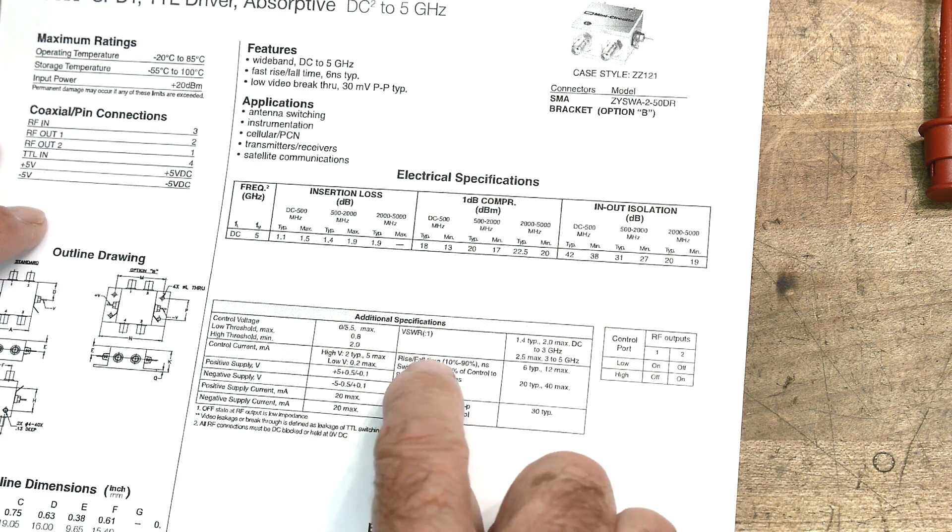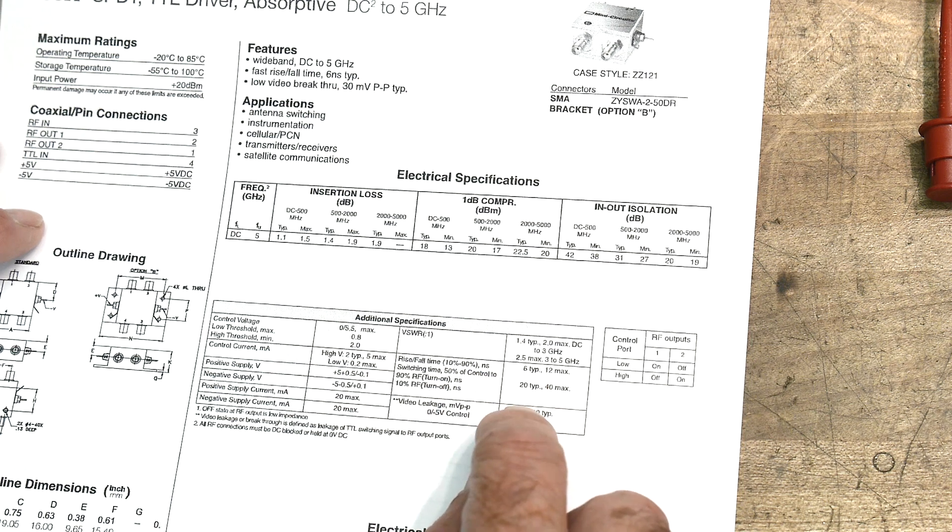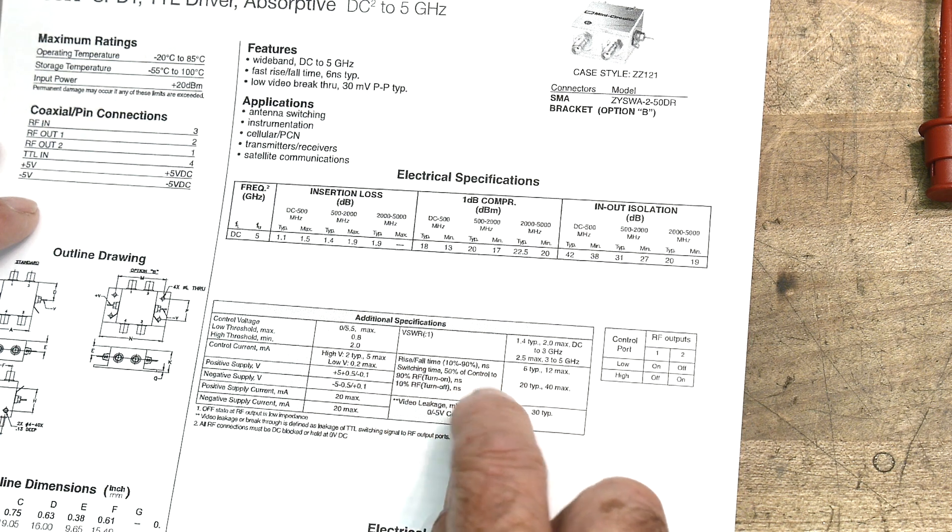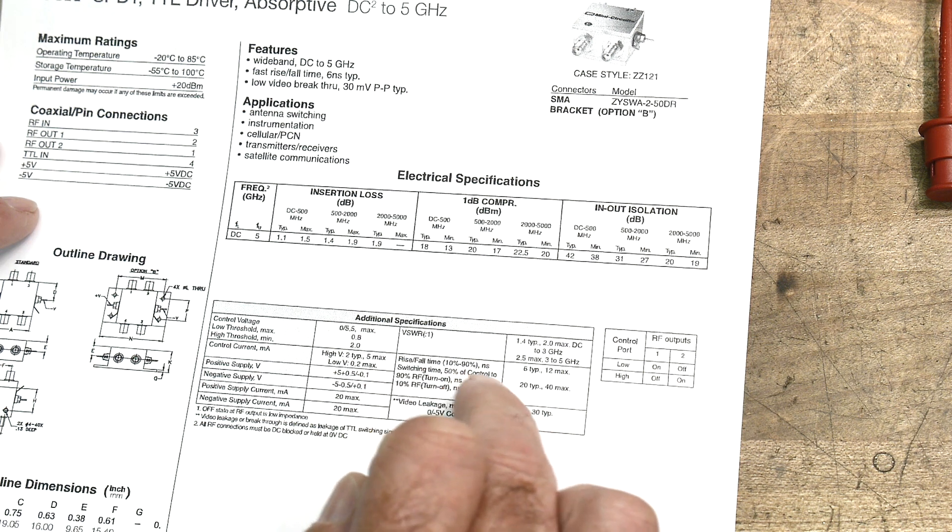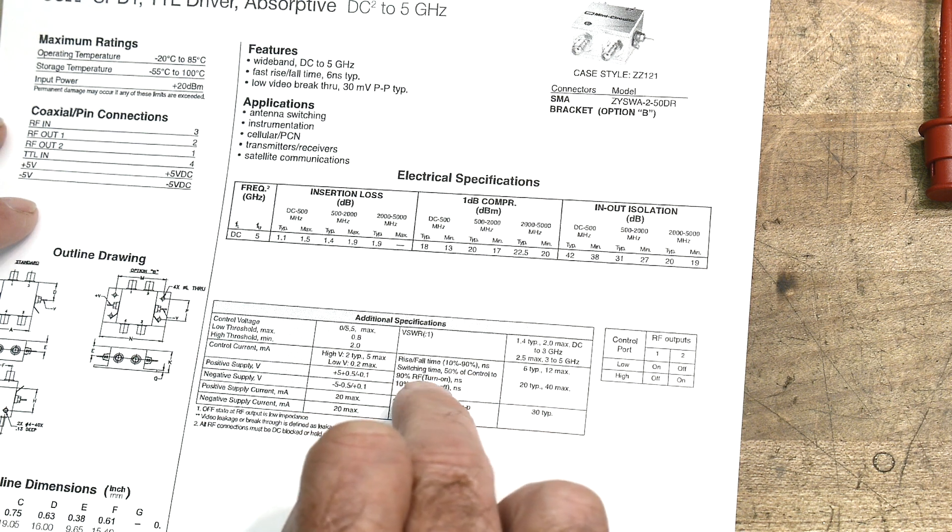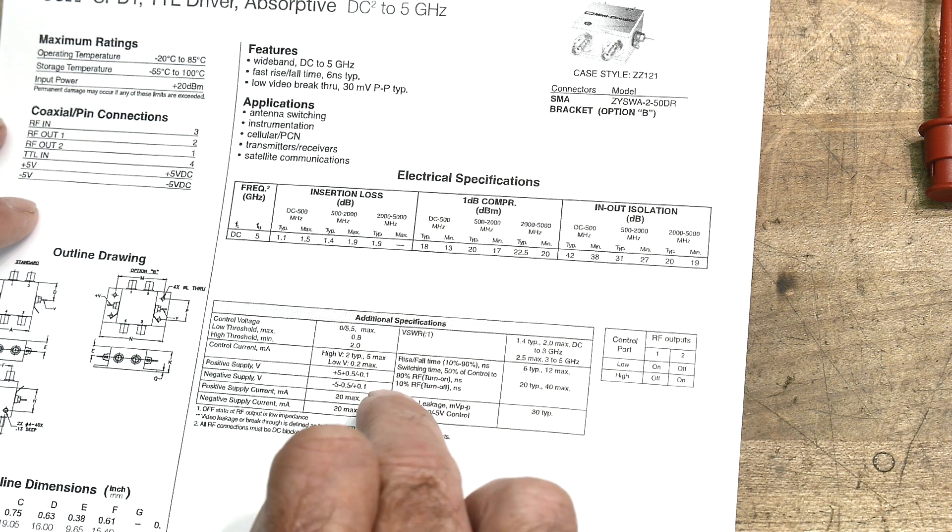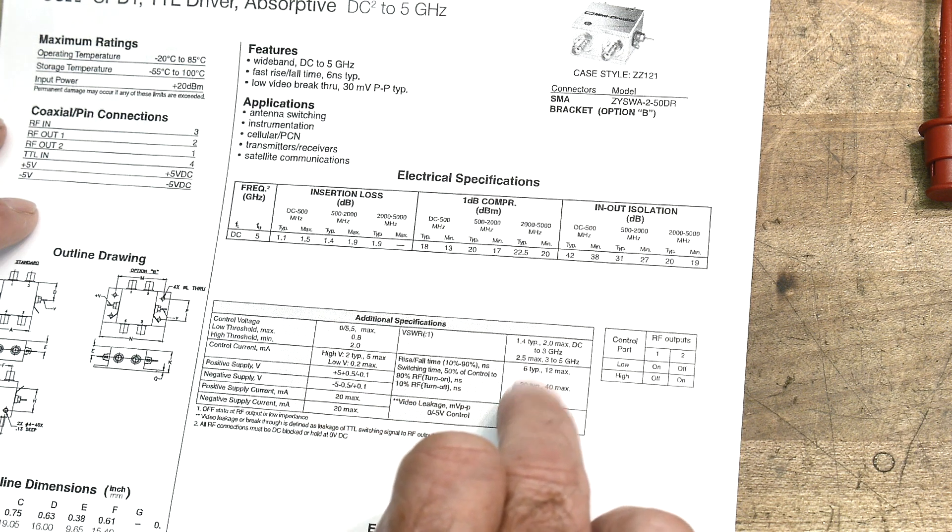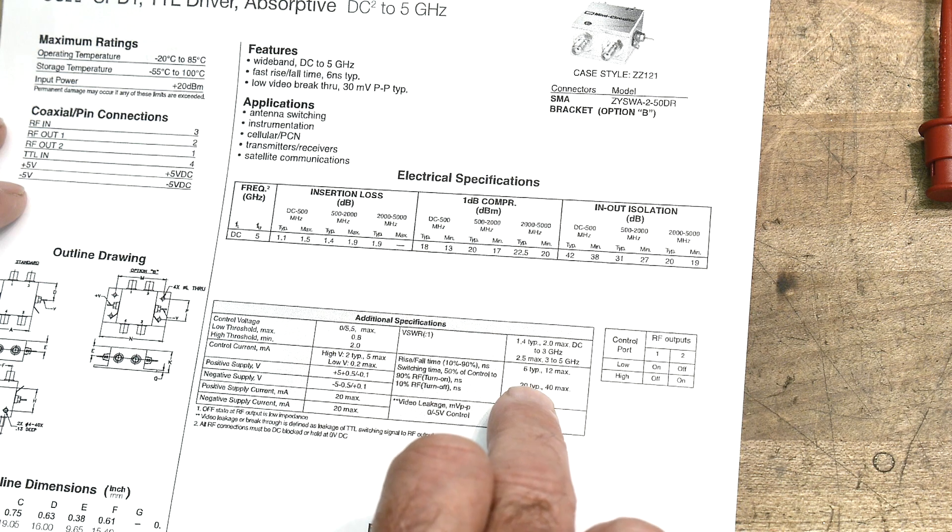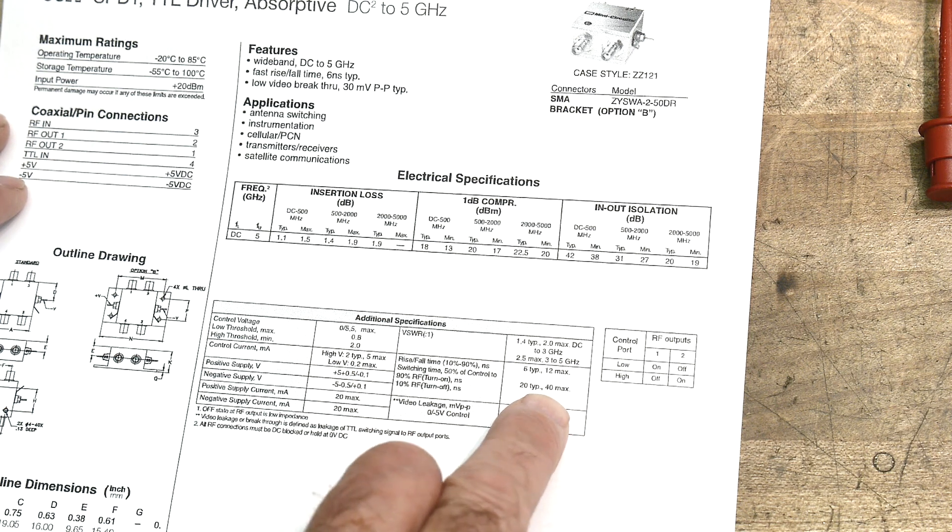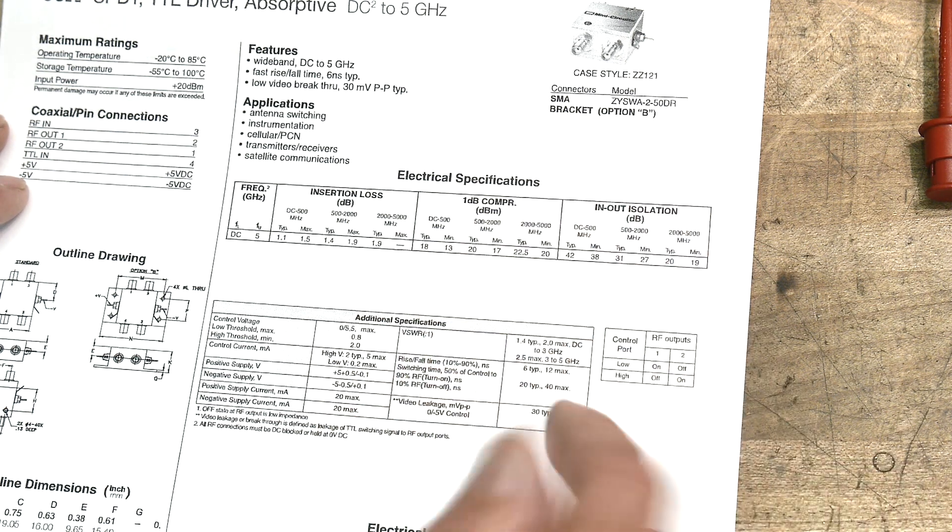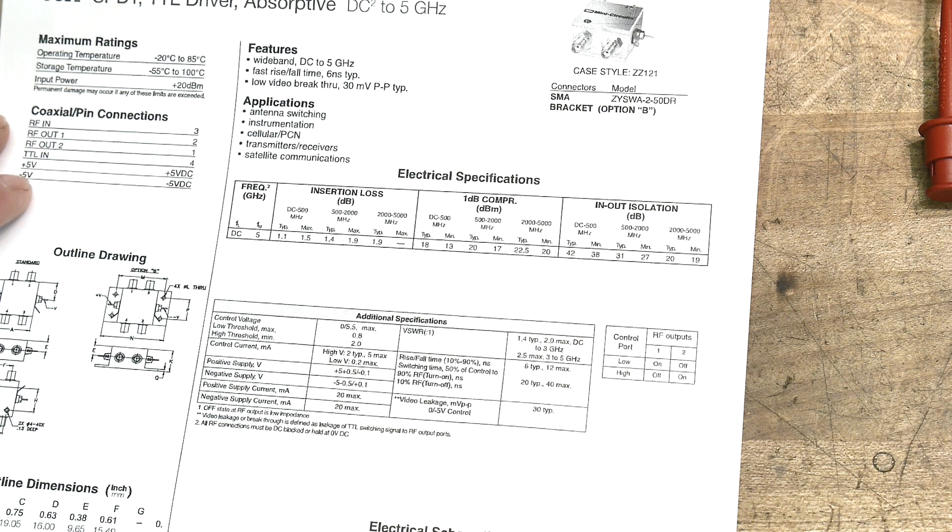Where is the switching time? Nanoseconds. Six nanoseconds? 90% control to 90% of RF turn on, or 10% turn off. So it says 20 nanoseconds typical and 40 nanoseconds maximum, so you can switch the RF in 20 nanoseconds. So that's pretty cool.